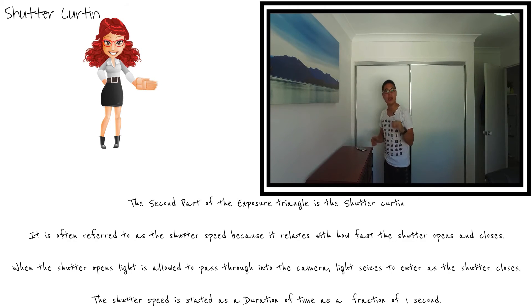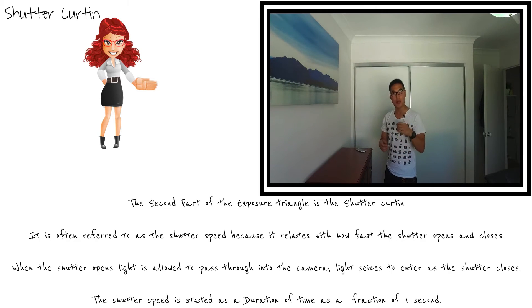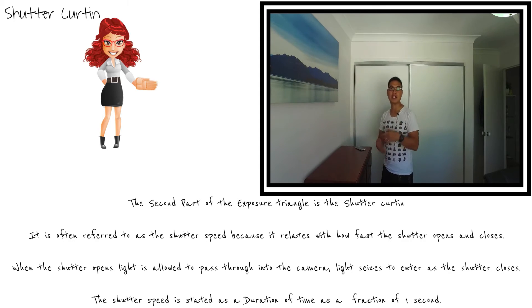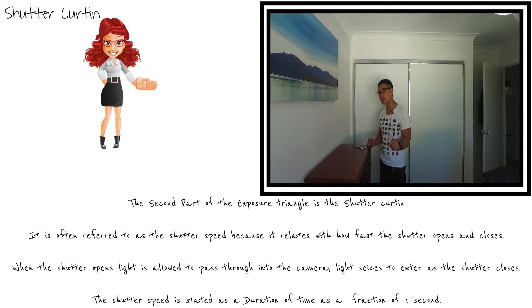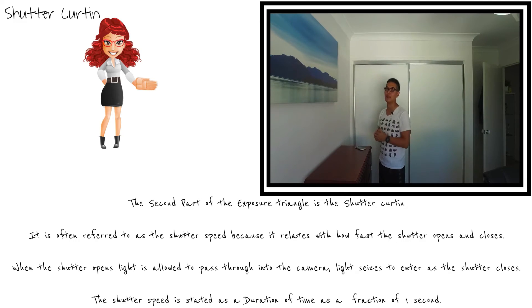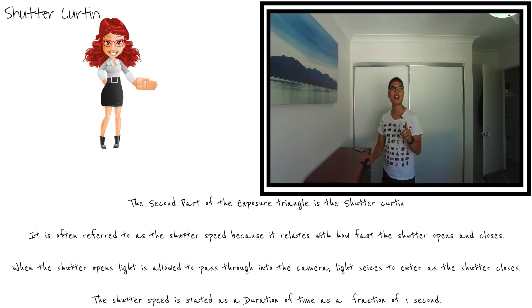The shutter speed is stated as a fraction of one second. For example, one five-hundredth of a second or one eight-thousandth of a second are very fast shutter speeds which allow very little light, relative to slower shutter speeds such as one second, five seconds, ten seconds, seventeen seconds, or up to minutes or even hours. The key point is that shutter speed controls the duration of time that light is allowed to fall through, with faster speeds allowing less light and longer speeds allowing more.